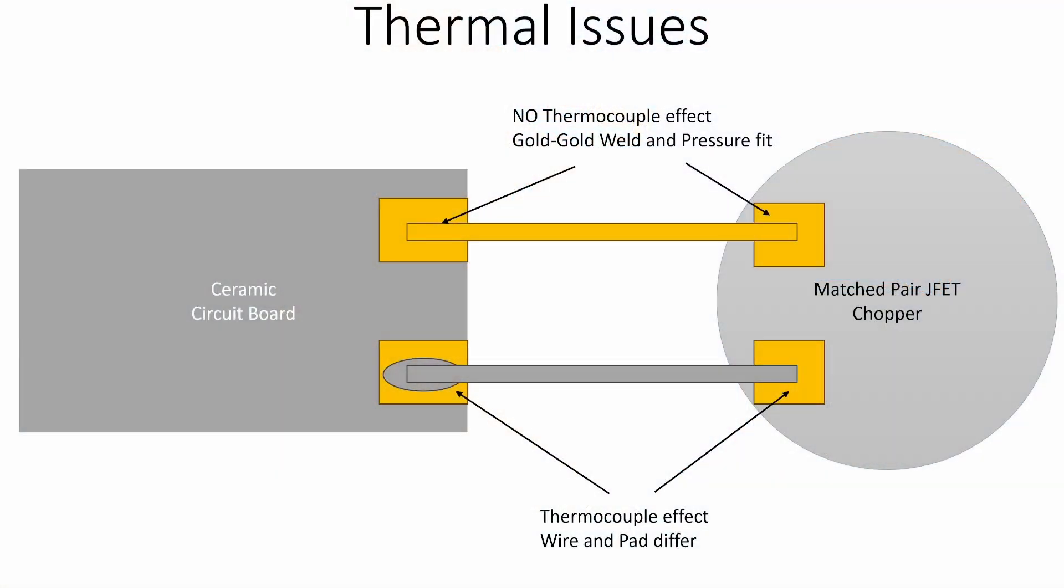I thought I'd add in this slide just to show the issue with using a non-matching wire. This is a kind of top-down view. Here's our ceramic circuit board with all our sensor on it and the gold pads on the edge. Here's our gold wire coming across to the JFET chopper hybrid. Essentially, there's no thermocouple effect because we've got a gold to gold contact which is welded on and a gold to gold contact which is just a pressure fit. HP have essentially eliminated the thermocouple effects.